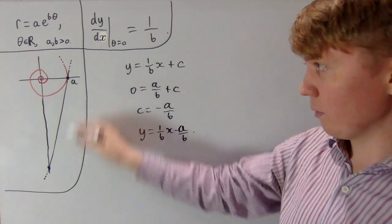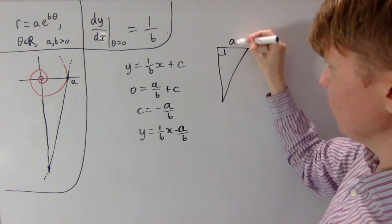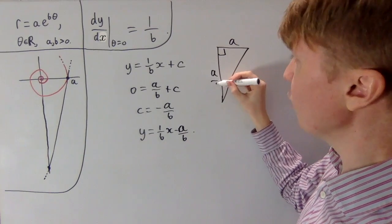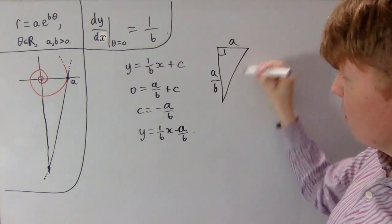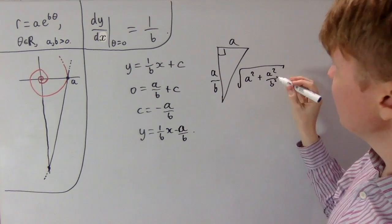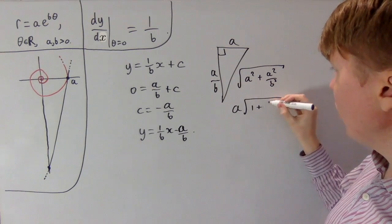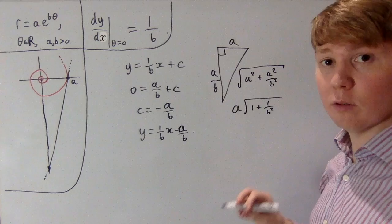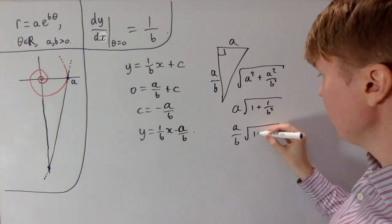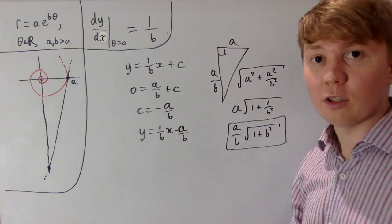To find the length of the line, we use the x-intercept and y-intercept forming a right-angled triangle. The horizontal length is a and the vertical length down to the y-intercept is a/b (since a and b are both positive). The total length is √(a² + a²/b²) = (a/b)√(1 + b²).